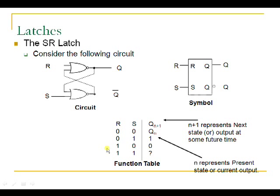This is the functional table, also called the truth table, which gives the relation between inputs and outputs. Q represents the present state or current state output, and Q-next represents the next state or future output. We will analyze this circuit by substituting the input combinations 0,0 then 0,1 then 1,0 and 1,1.